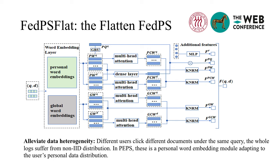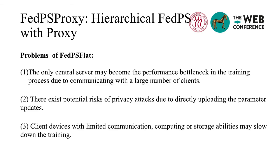All parameters of PPS can be divided into personal word embeddings, global word embeddings, and parameters of the ranking module. The personal word embeddings are updated with the user's data, which contain a wealth of user privacy and should be kept on the client. Parameters of the personalized ranking model contain the least privacy. The global word embeddings are knowledge shared by all users. Whether and how to upload the global word embeddings depend on the requirement of privacy protection. FAPIAS mitigates the privacy risks associated with centrally connecting data, but there are still some problems: the only central server may become the performance bottleneck in the training process due to communicating with a large number of clients.